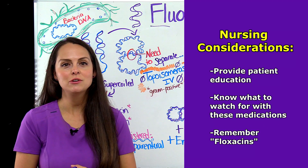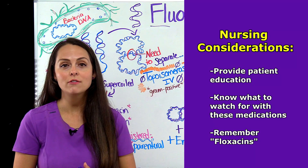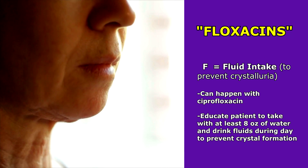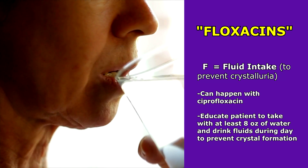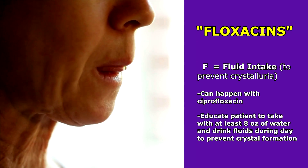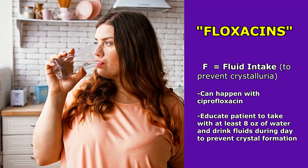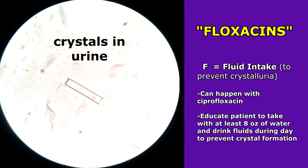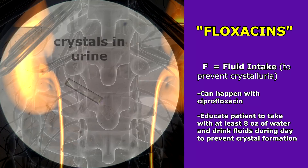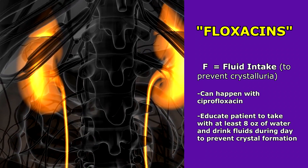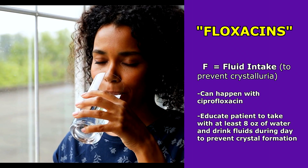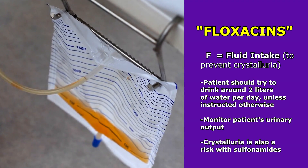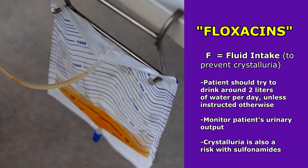To help remember the main nursing concepts, we use the mnemonic FLOXACINS. F is for fluid intake to prevent crystalluria, which can especially happen with ciprofloxacin. Educate the patient to take this with at least eight ounces of water and drink fluids throughout the day to prevent crystals from developing in the urinary system. Crystalluria can occur when urine becomes too alkaline, and the crystals can cause a blockage in the kidneys leading to renal failure. If not contraindicated, the patient needs at least two liters of fluid per day, and monitor urinary output.